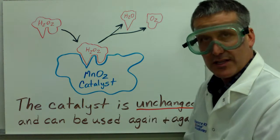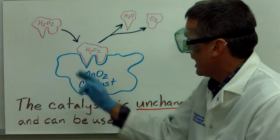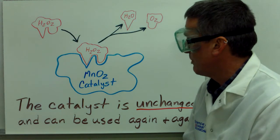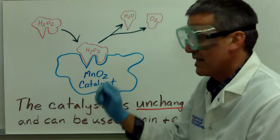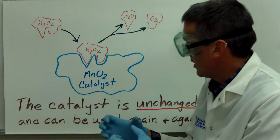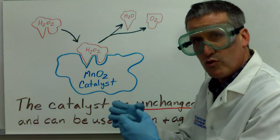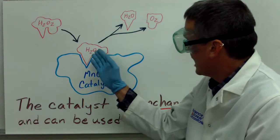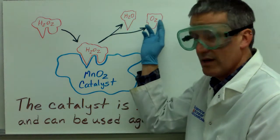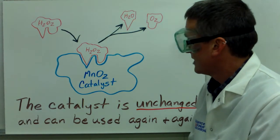So, this is actually called the active site of the catalyst, and it actually binds or bonds with the hydrogen peroxide, putting pressure on the hydrogen peroxide, tweaking the bonds a little bit, and causing it to react and to be converted into the products, in this case, water and oxygen gas.